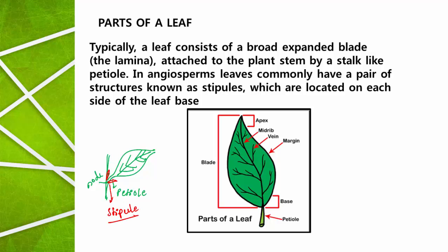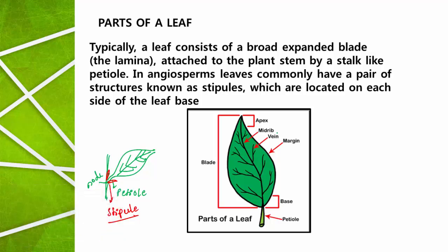At the base of the petiole, a pair of small leaf-like structures are present — they are called stipules. Moving to the next very important parts of the leaf shown in the image: this is the leaf tip, also called apex. Here we see the midrib, vein, and margin. Margin means the boundary of the leaf. This green expanded portion is called lamina, which is bordered by the leaf margin. Within the lamina you can see the midrib and veins.